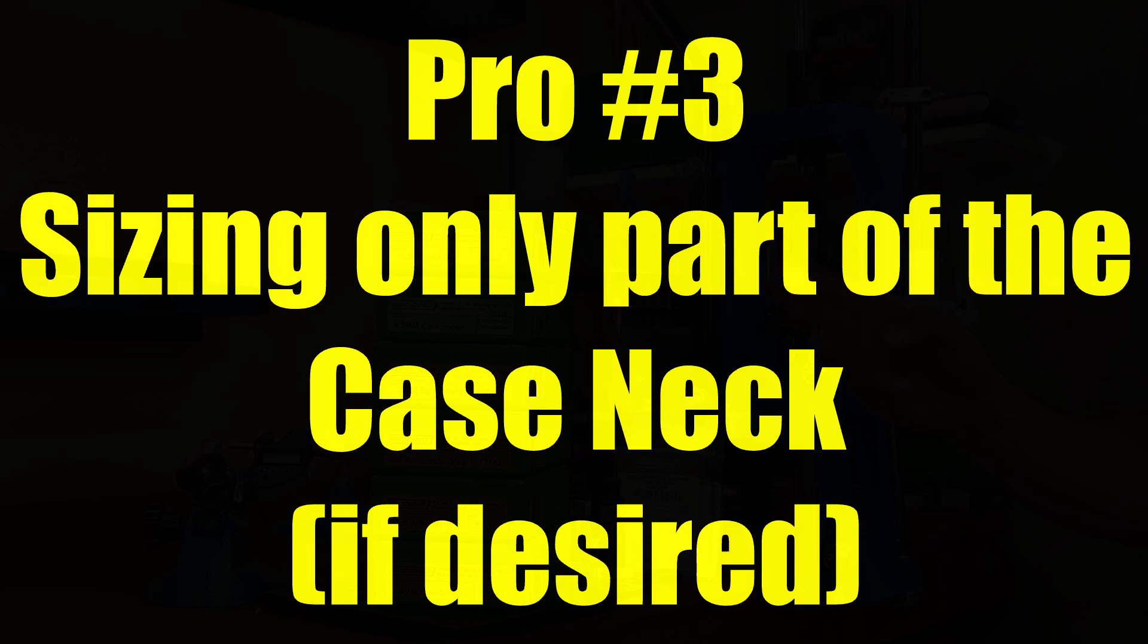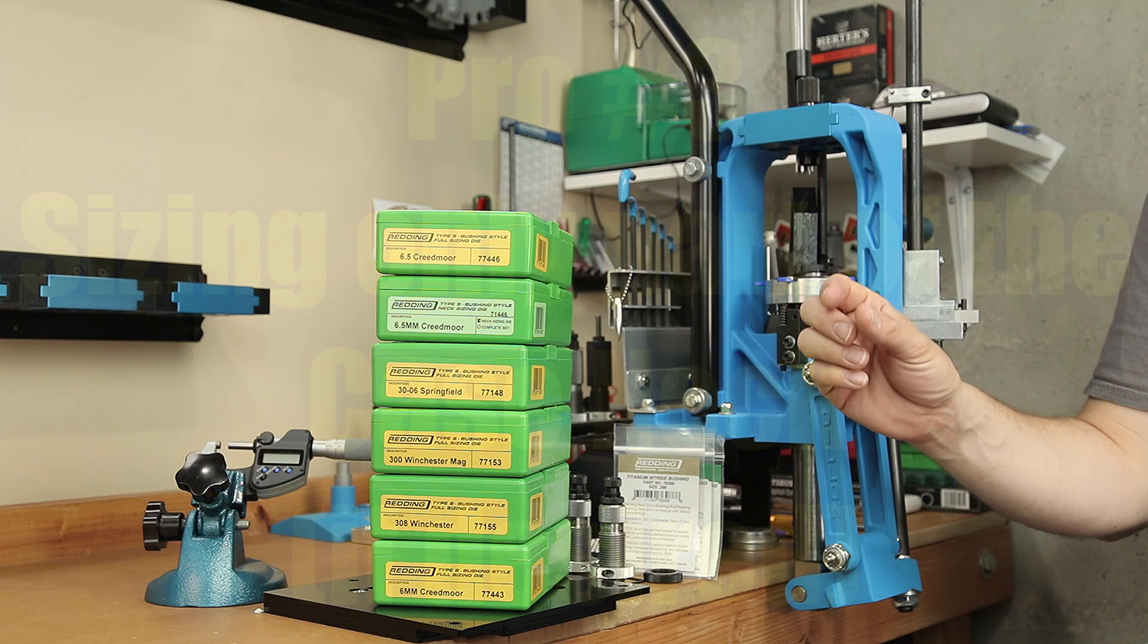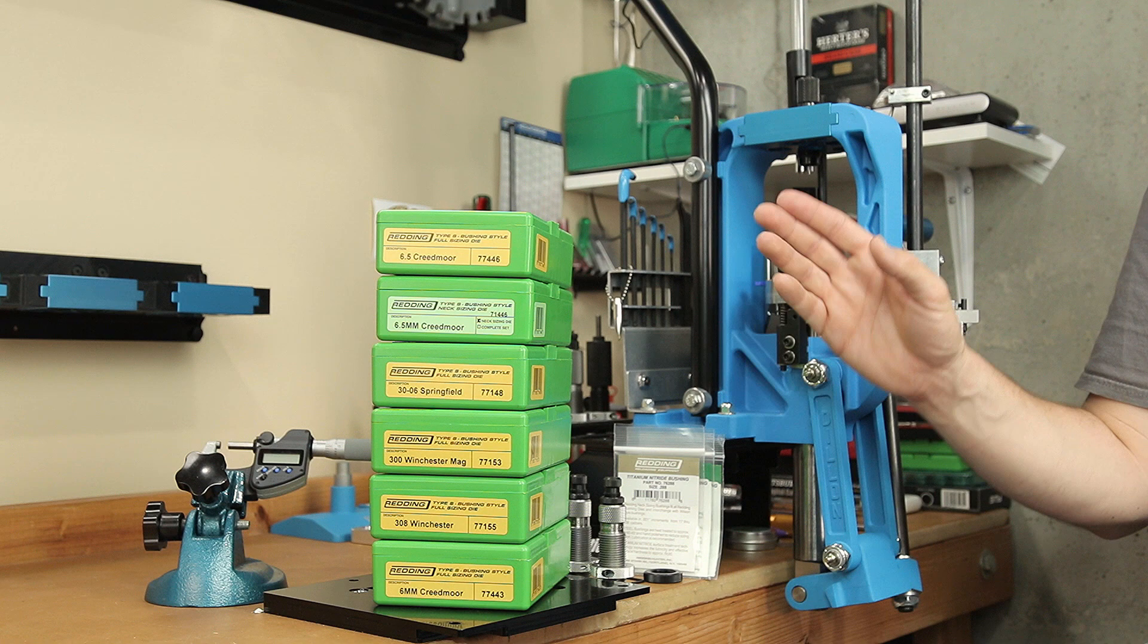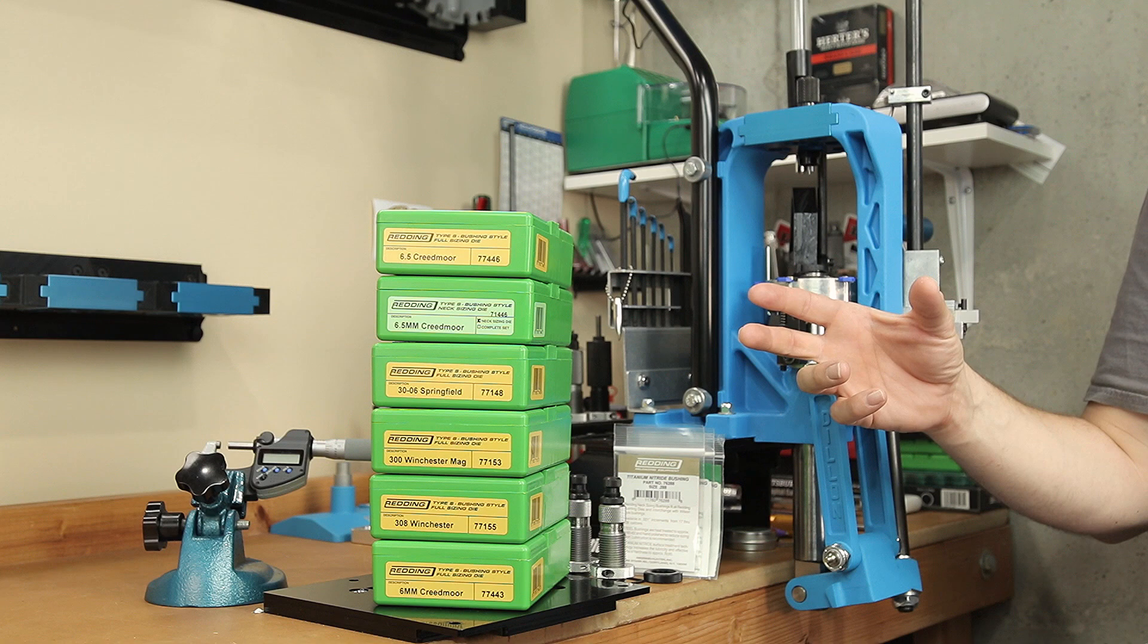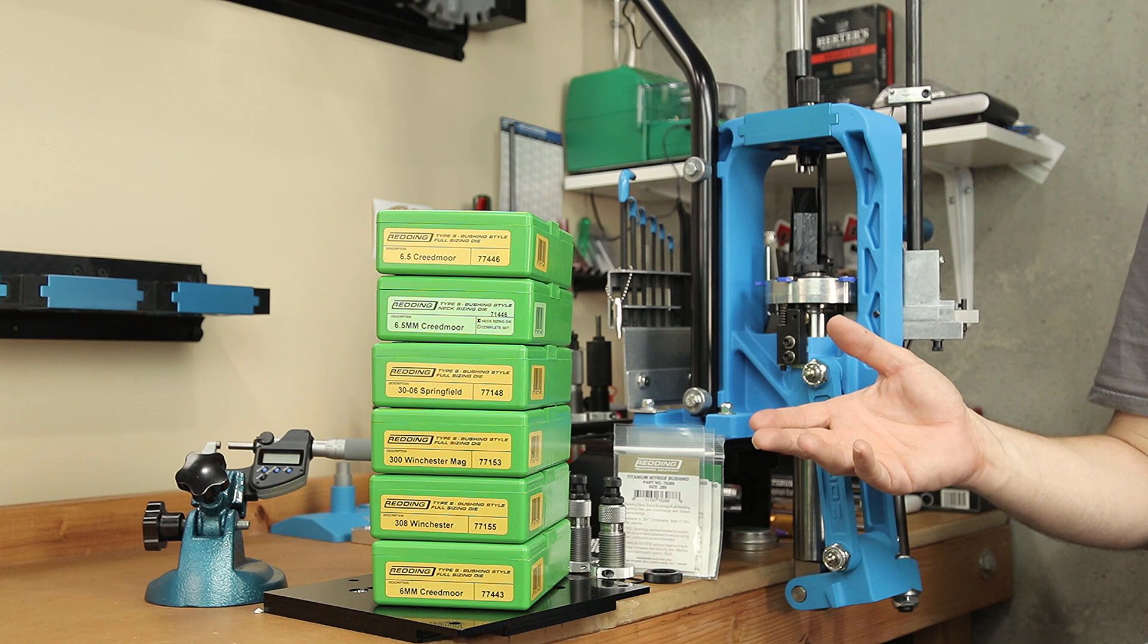The third reason you might want to use these bushing dies is to not completely size the neck of the case. I've heard a lot of people talk about only resizing two-thirds to three-quarters maybe of the actual neck dimension when using bushing dies. This will leave a little bit of your neck that's more closely sized to your chamber to possibly allow for better centering. I can't say personally that that's a huge factor, but I do know that people don't necessarily recommend using the bushings to resize the entire length of the case neck.